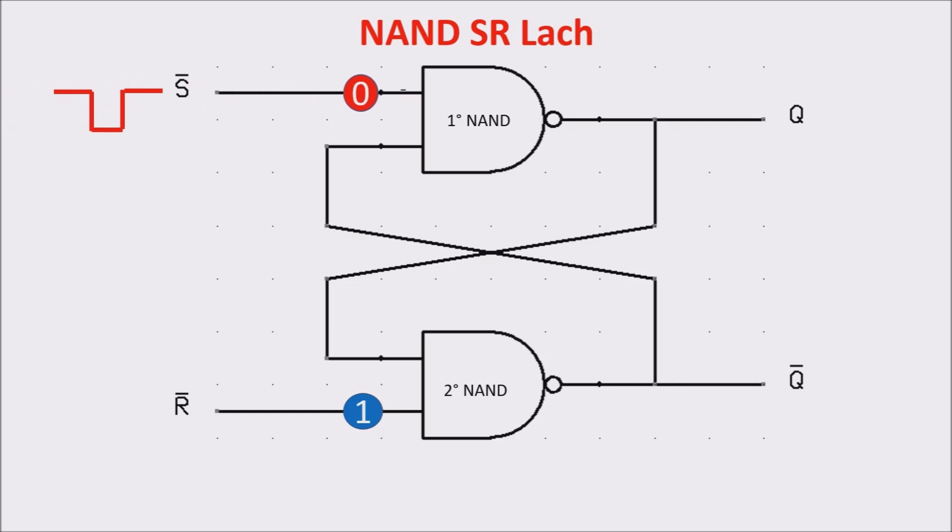A NAND gate with a zero in input puts the output to one and consequently the second gate, having a one in both the inputs, puts the output to zero. You can see Q is one and not Q is the opposite, zero. If now we turn back input S to one, nothing happens. Q keeps the value one and not Q keeps the value zero. In a certain way, Q remembers the previous bit.